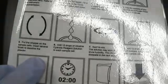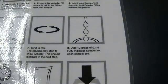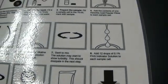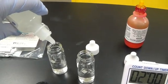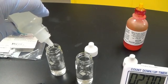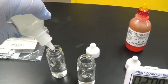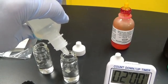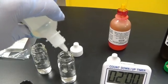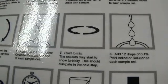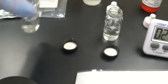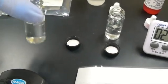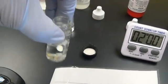I put on the stopper and swirl to mix. Then I add 12 drops of the alkaline cyanide reagent solution to each well. You don't have to put on the cap, just swirl it. Here's my blank and here's my test.